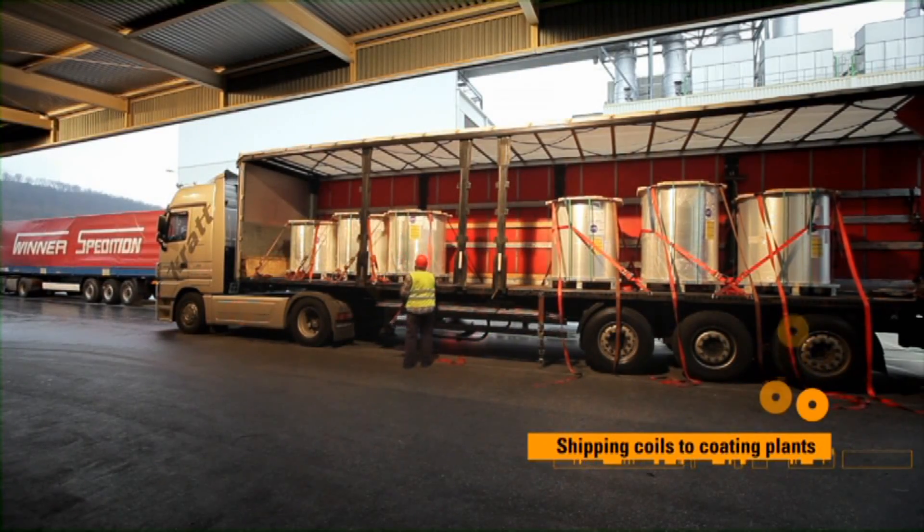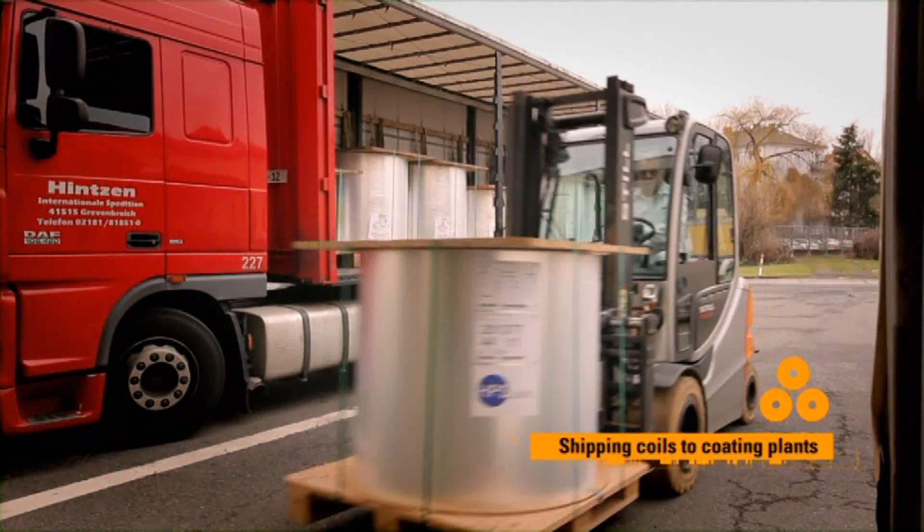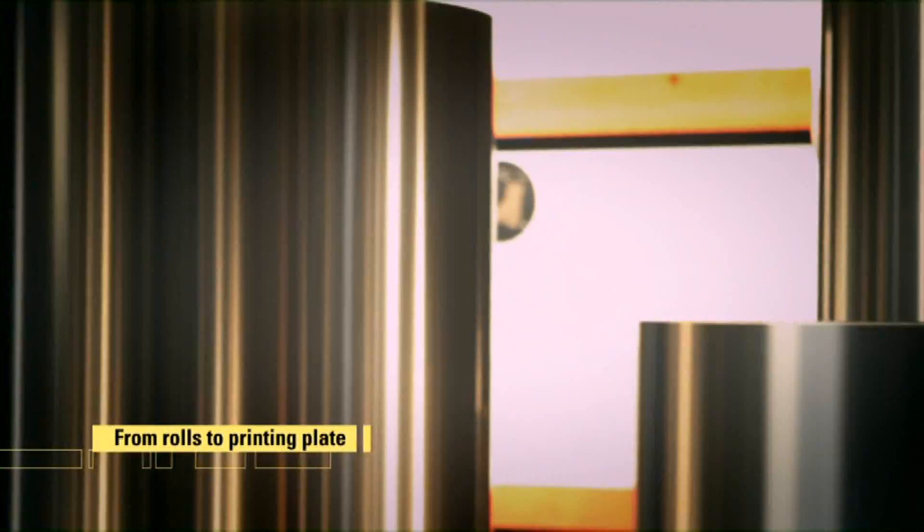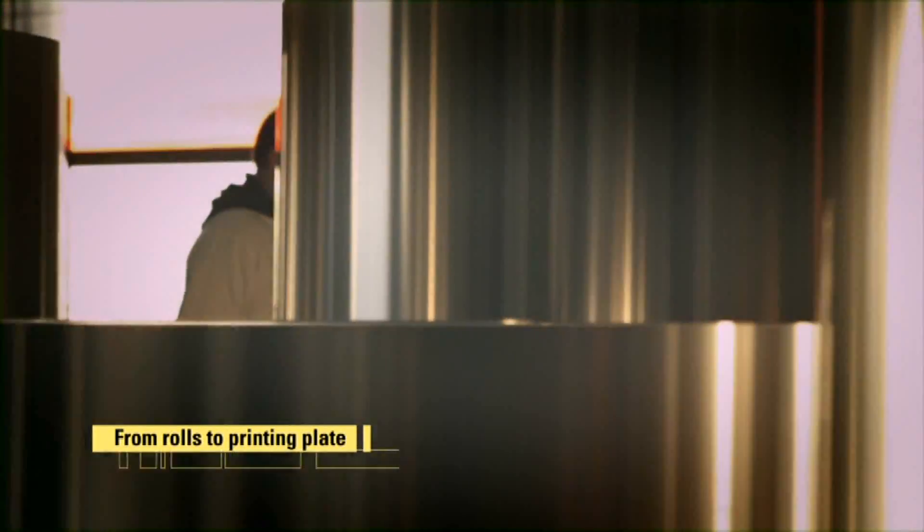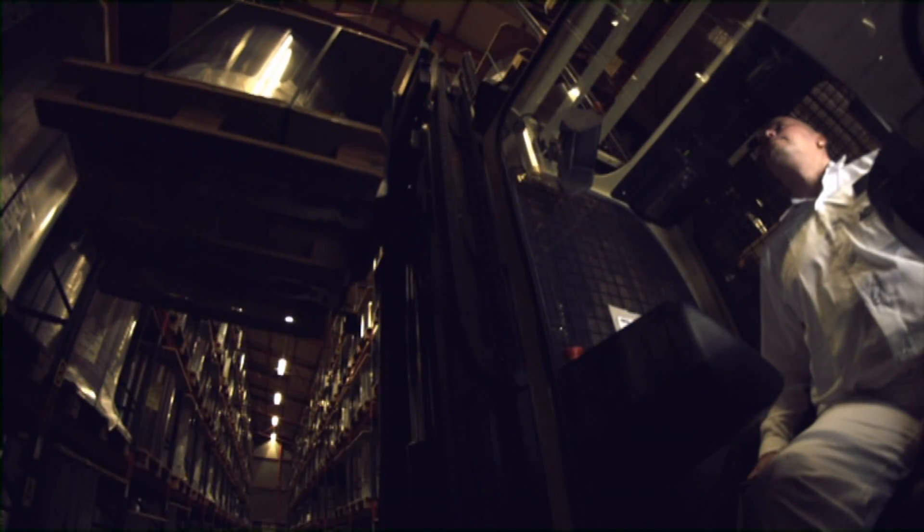These aluminum coils will now serve as the backbone of the actual printing plate. You will now see how these rolls will be coated and shaped into high-tech printing plates. In this case we are visiting Agfa's Wiesbaden plant in Germany where we can see an array of coils of different thicknesses in the vast warehouse.